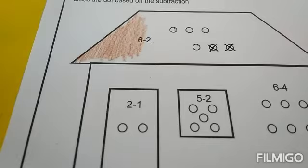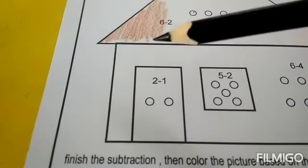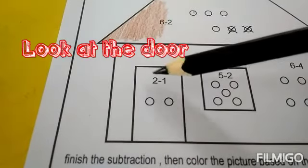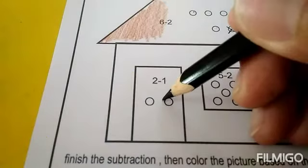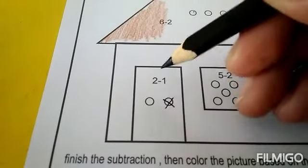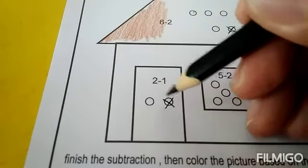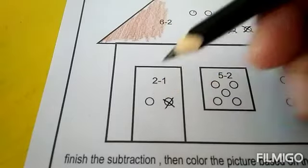Next, let's see the door. Look at the door: two minus one. So you have to cross one dot. Two minus one equals one - that's correct.